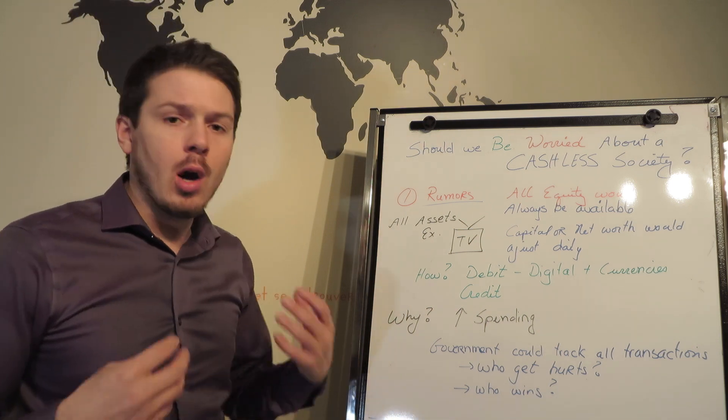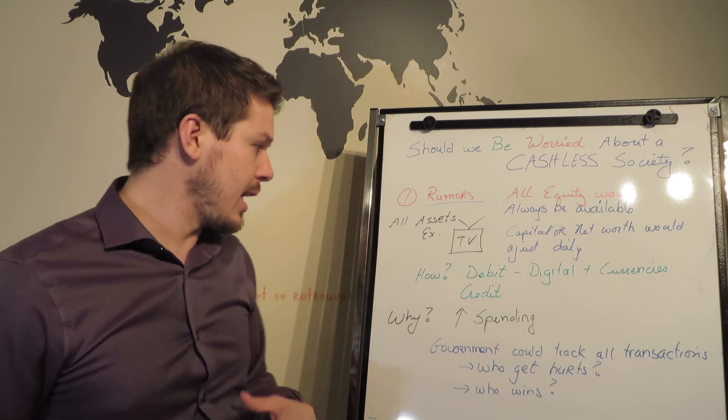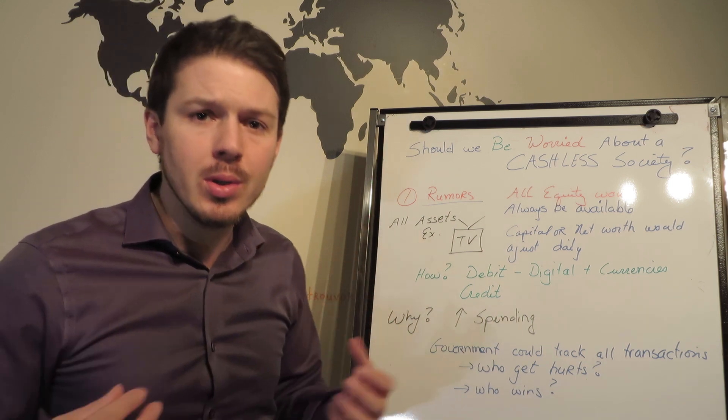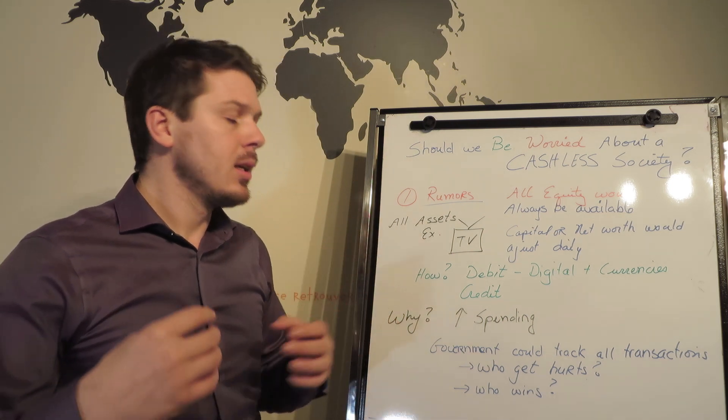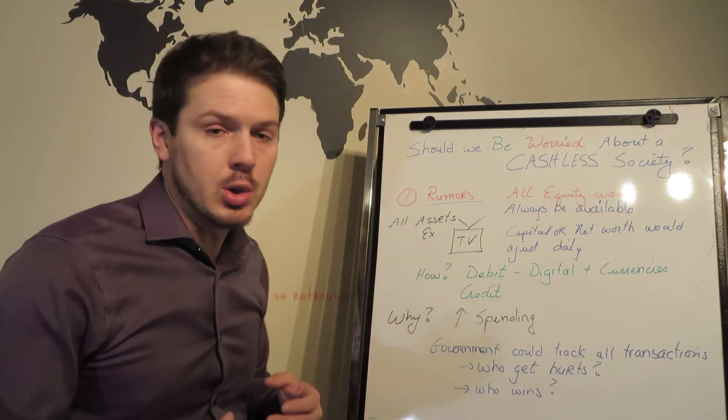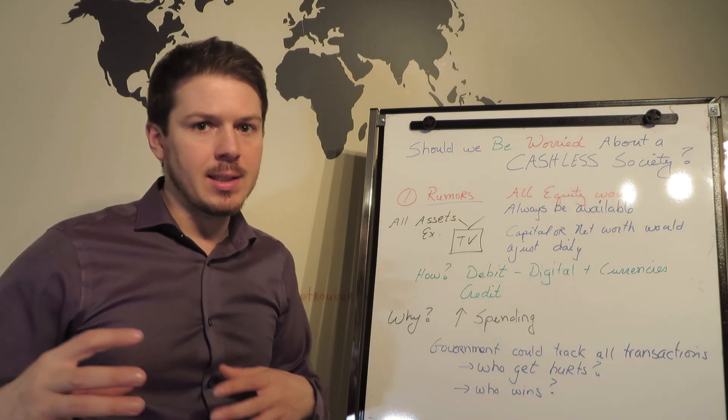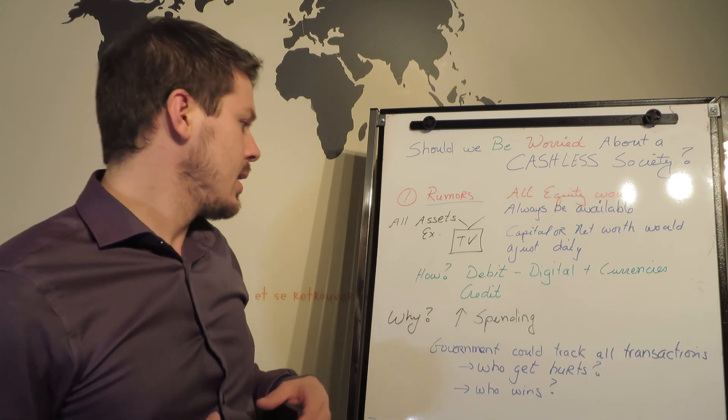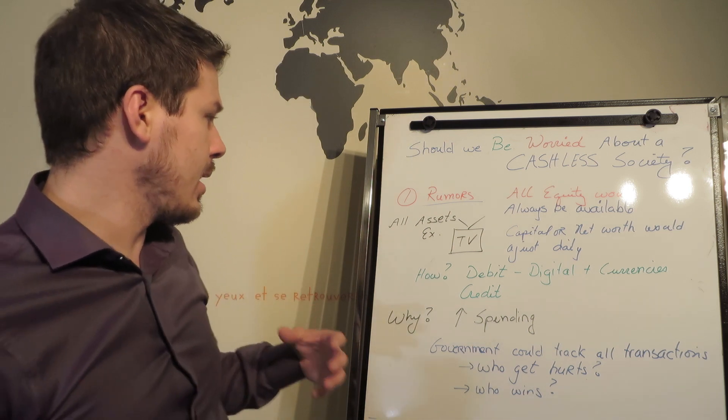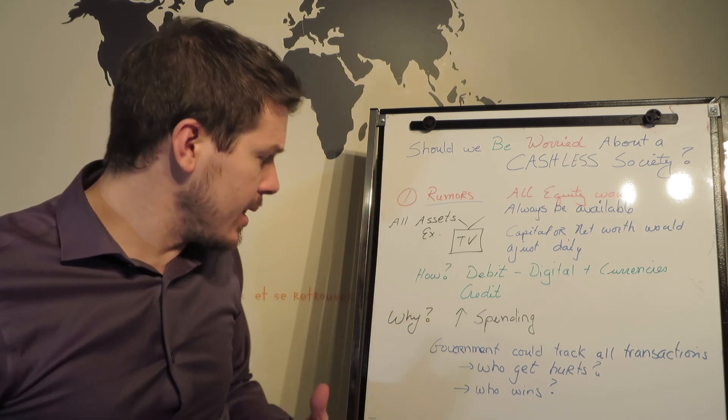So how are we going to, if we are becoming a cashless society, how is it going to happen? Well, many rumors, like we're already with debit, credit and some rumors are digital currencies, maybe JP Morgan is going to create a currency that would fluctuate with the currencies that's already in the US. Why is the goal of this? It's to increase spending.